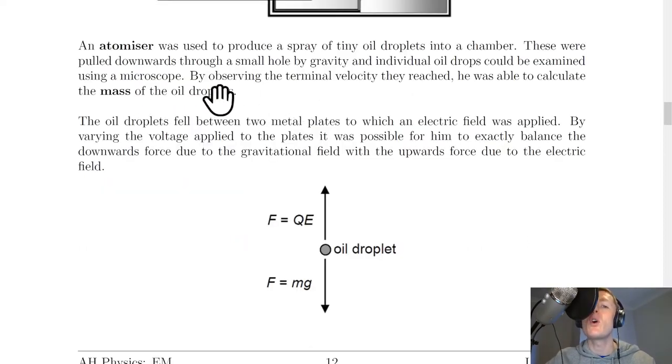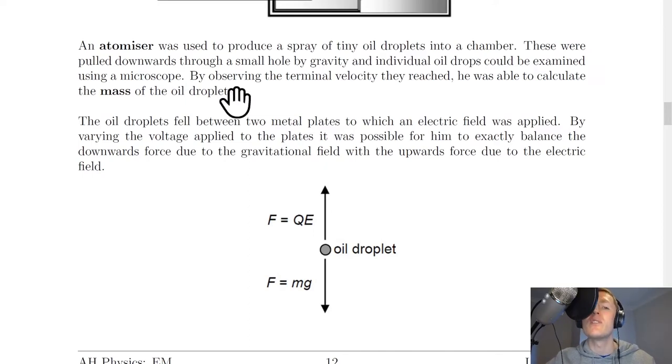The mass of the oil droplets was necessary for Milliken to determine the charge on the electron. Oil droplets fell between two metal plates to which an electric field was applied. By varying the voltage applied to the plates it was possible for him to exactly balance the downwards force due to the gravitational field with the upwards force due to the electric field.